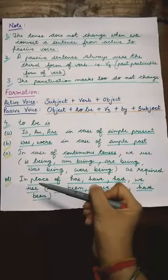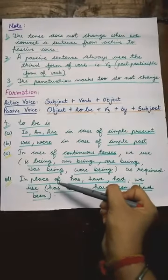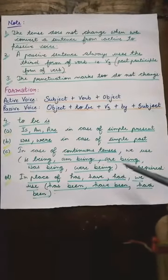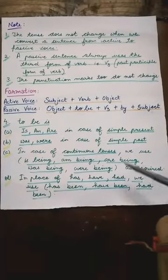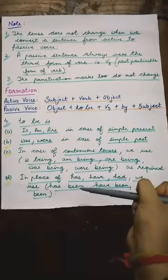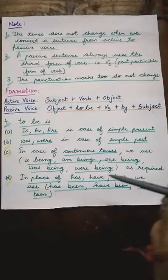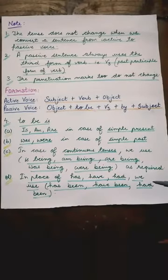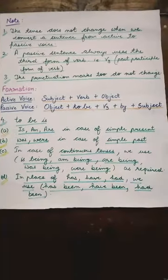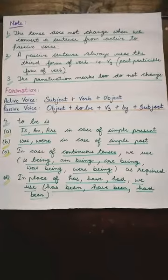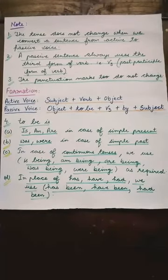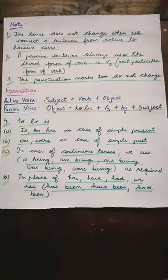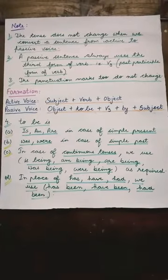Point number D: in place of has, have, had — we use has been, have been, had been. Now students, read again this point in your mind. Simply 'be' is used for imperative sentences, request and command, and sentences containing modals.